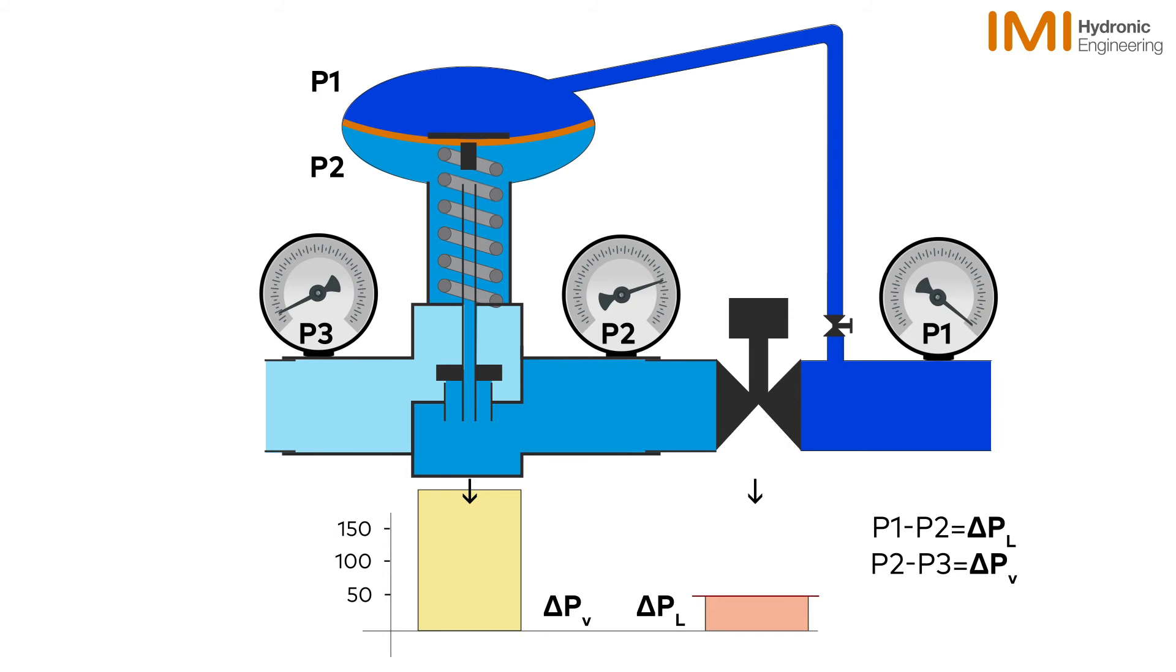Upon a decrease in available pressure P1 minus P3, the valve acts in reverse. Initially delta PL will reduce. The valve will then act upon this change and open to bring delta PL to set point and decrease delta PV proportionally.